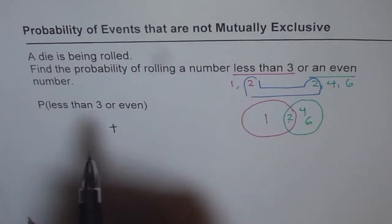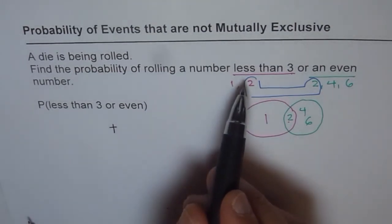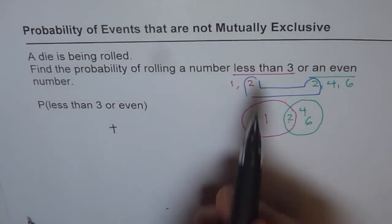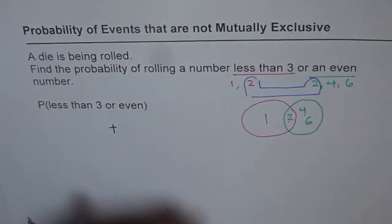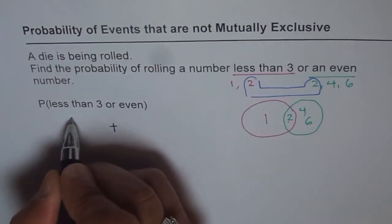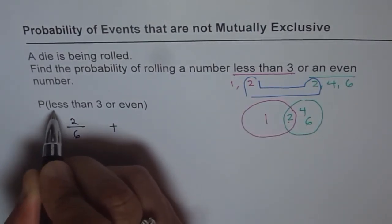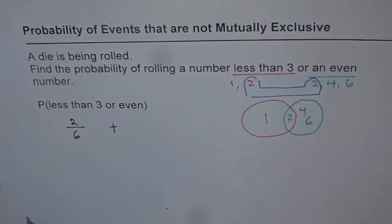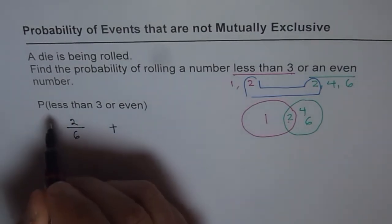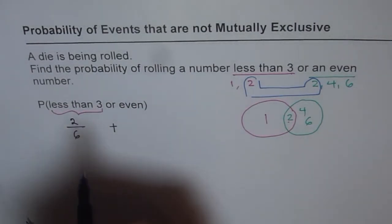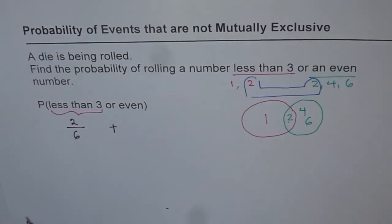And less than 3 will be, there are 2 numbers less than 3. And when you roll a die, there are 6 options. There are 6 outcomes. So total outcomes are 6. And therefore, we can say it is 2 out of 6. That is less than 3. So this is the probability of less than 3.